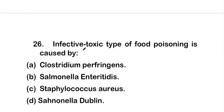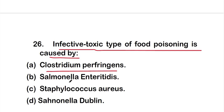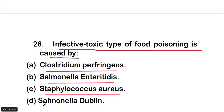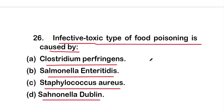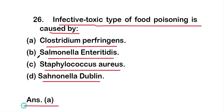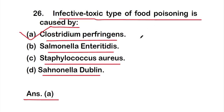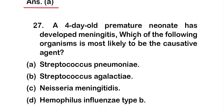Question 26: Infective toxic type of food poisoning is caused by — option A: Clostridium perfringens, option B: Salmonella enteritidis, option C: Staphylococcus aureus, or option D: Salmonella dublin. The right answer is option A, Clostridium perfringens, which causes infective toxic type of food poisoning.